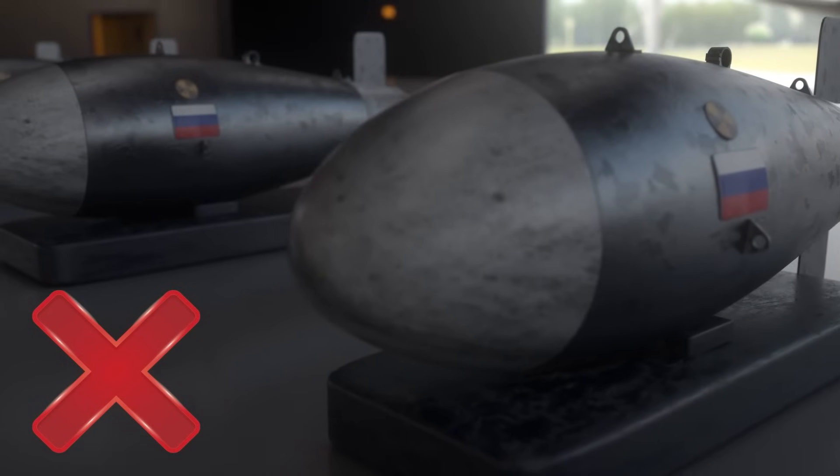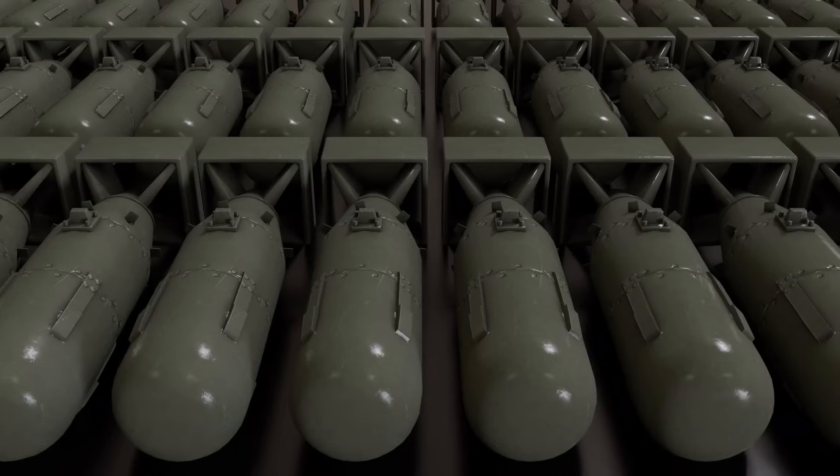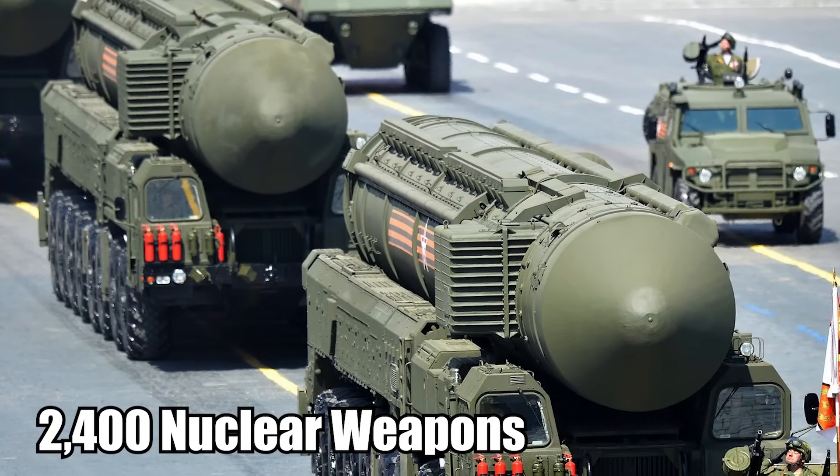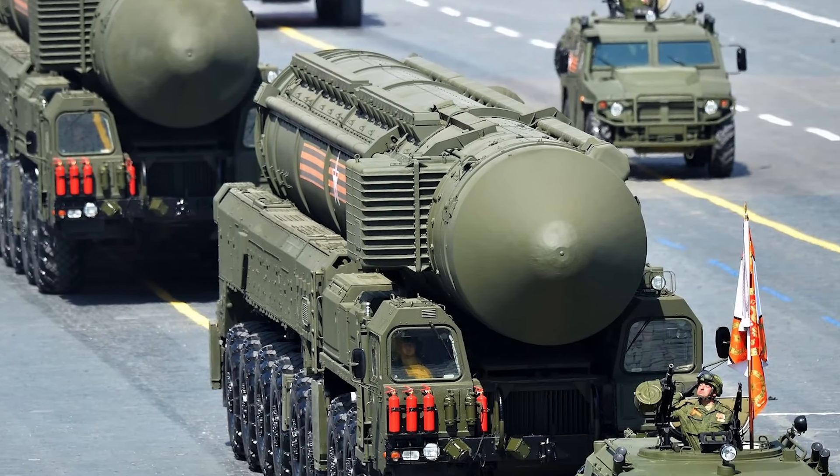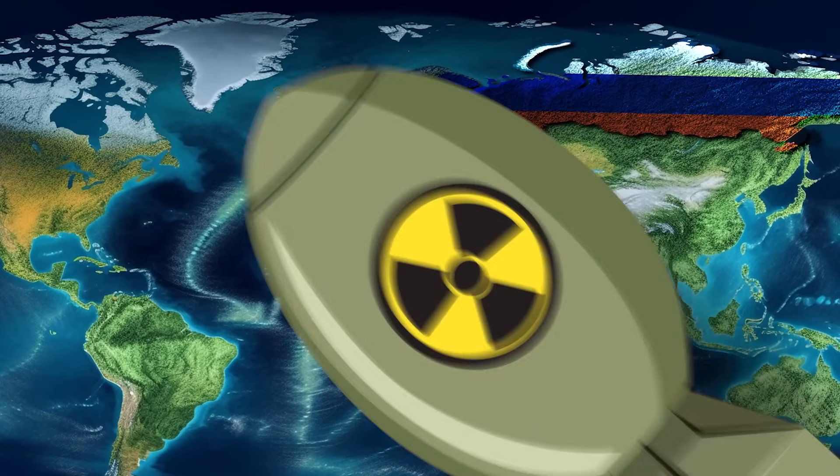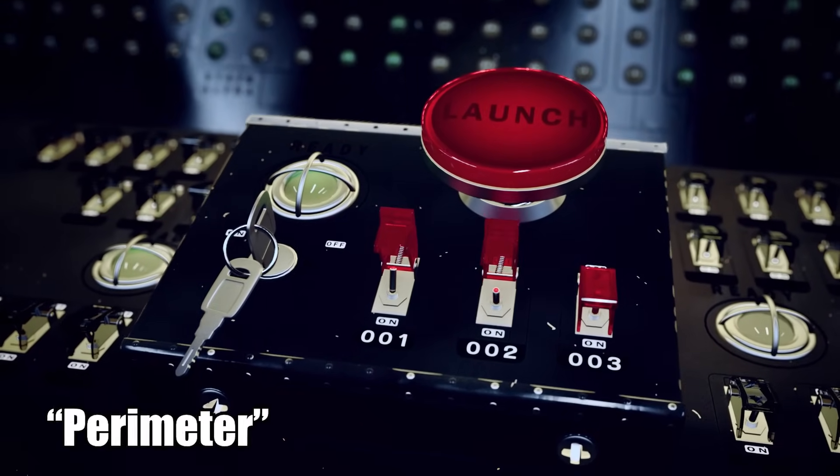There's no official number for how many nuclear weapons Russia currently has in their arsenal. However, estimates place that number at around 1,600. Then there are the 2,400 strategic nuclear weapons that they have strapped to ballistic missiles. Russia is without a doubt one of the largest nuclear powers on the planet, and these weapons are tied into a system known as Perimeter.